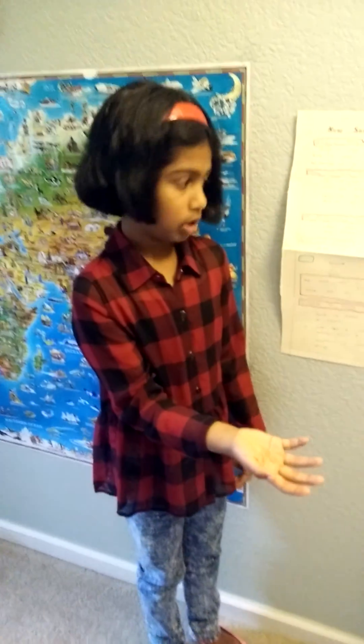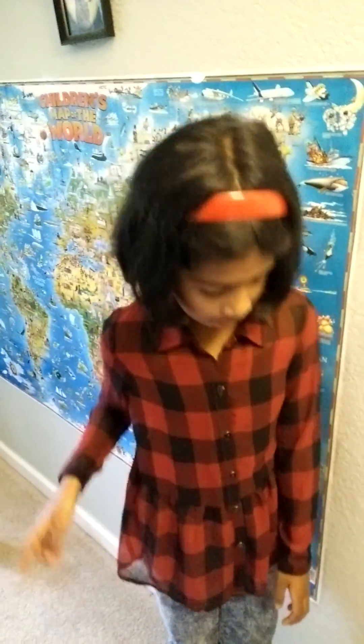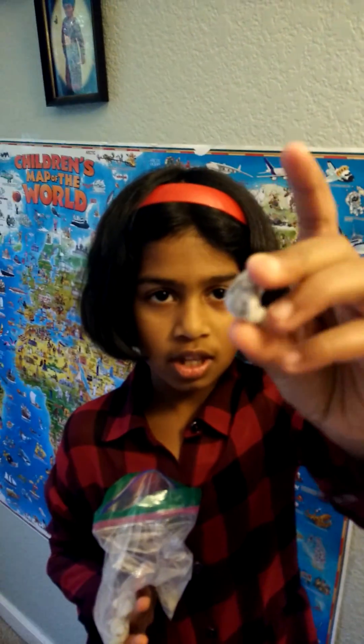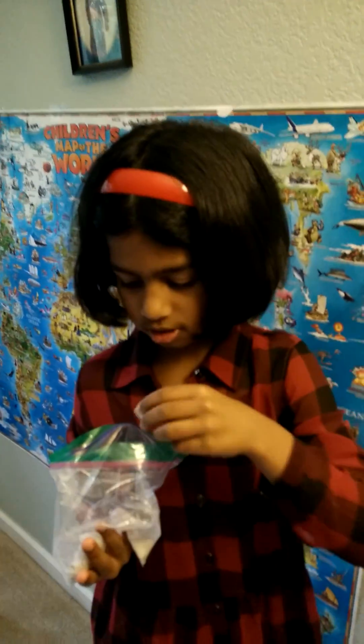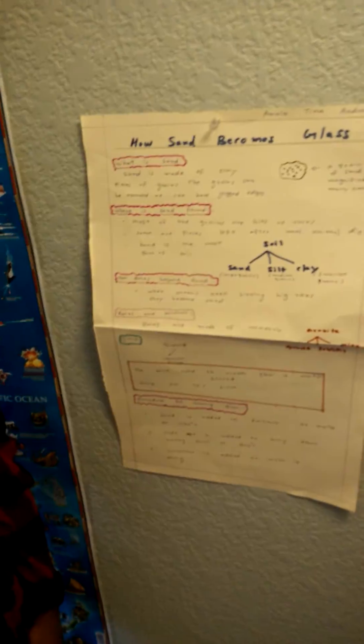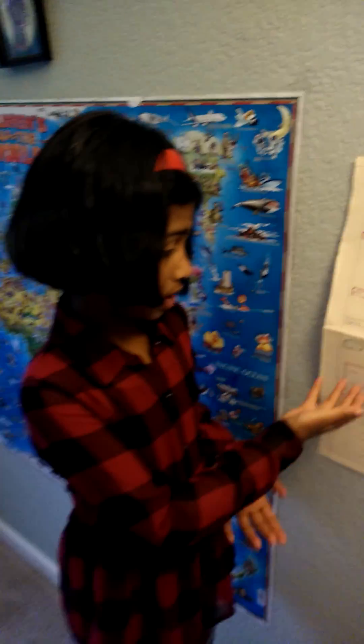Rocks and minerals — rocks are made out of minerals like granite. It's a rock made out of three minerals: quartz, feldspar, and mica. I have a little sample of quartz here. This is the outside of a quartz, and the inside looks very pretty with crystals. And silica — the sand used to create glass is mostly silica. Glass has 70% silica.